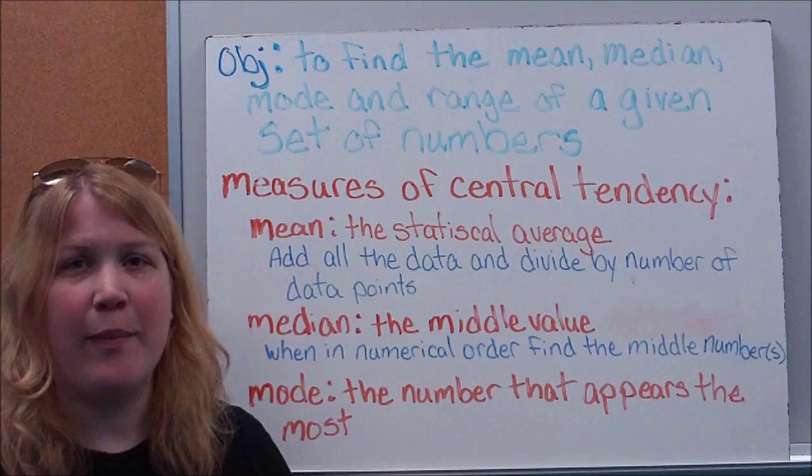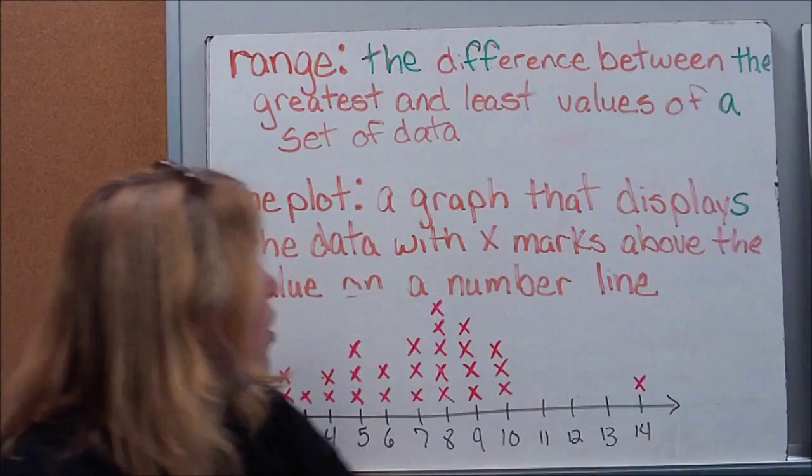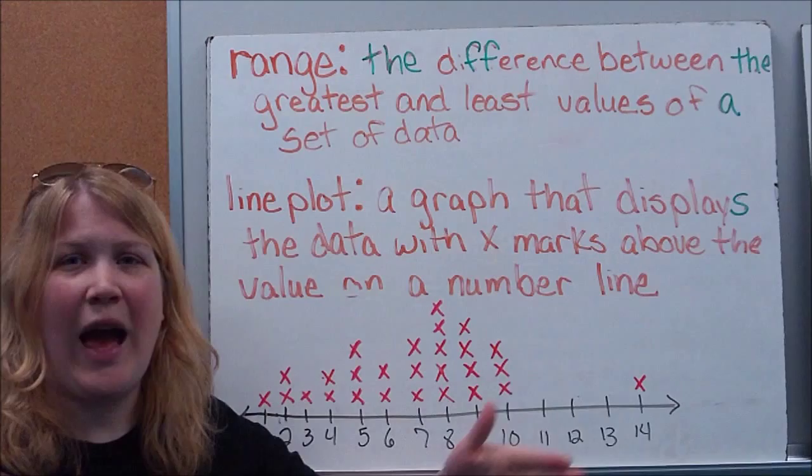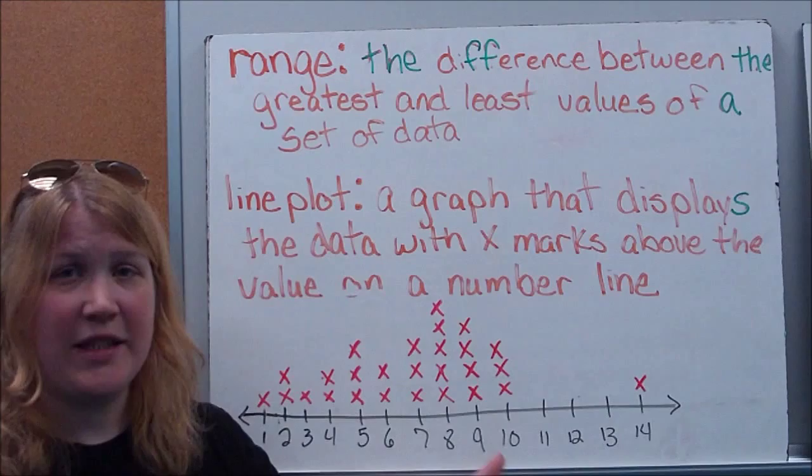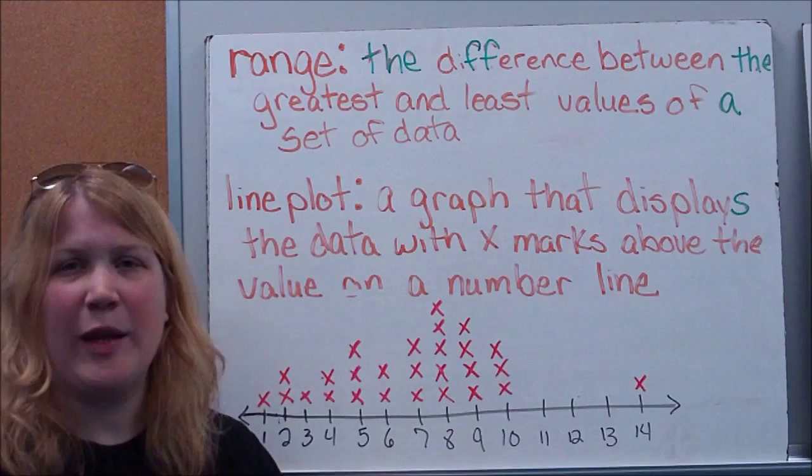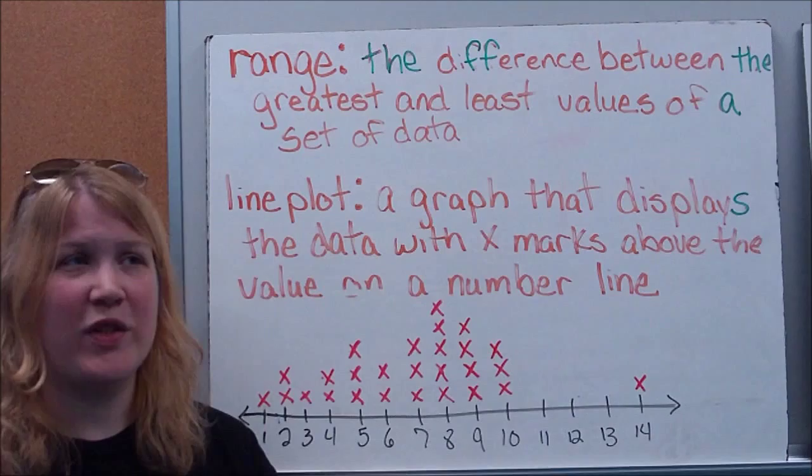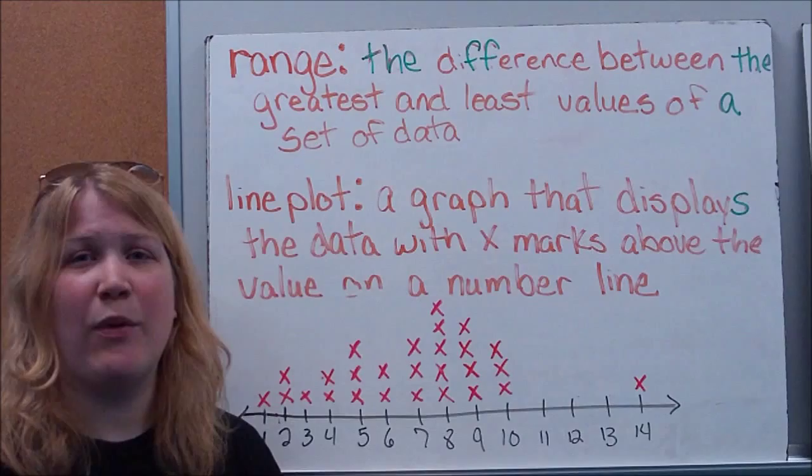The last term that you see up here that we're going to define is called our range. Our range is simply referring to how far does the data span. So basically what I'm doing is I'm subtracting my least number from my greatest number, the smallest from the biggest, and that's going to tell me how many places it kind of fell across. So for example, if I gave a test and the lowest grade was a 72, the highest grade was a 100, I can subtract those two and say, well, everybody fell within 28 points of each other. That's my range.